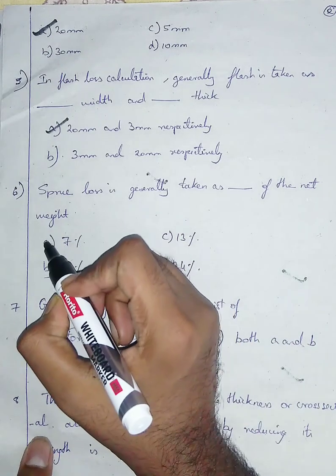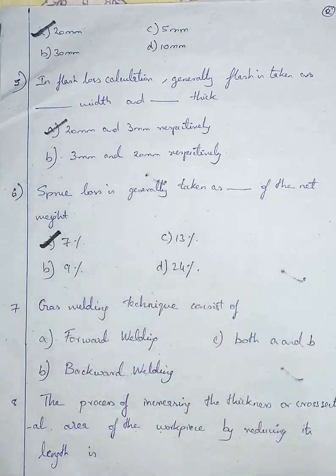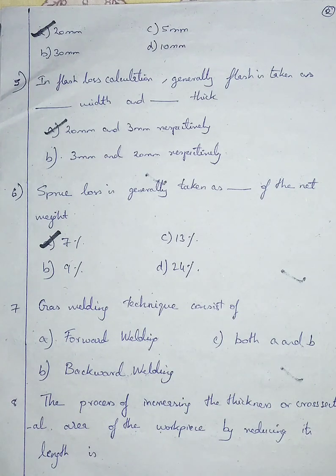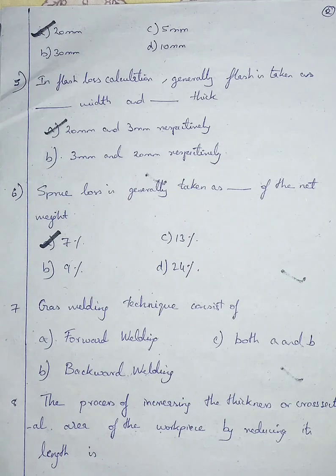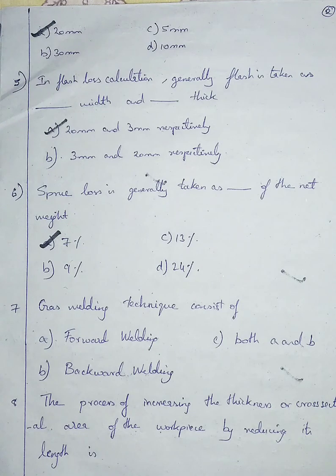Question number seven: gas welding technique consists of — option A: forward welding, option B: backward welding, option C: both A and B. Gas welding technique consists of both forward welding and backward welding, so I'm going with option C.